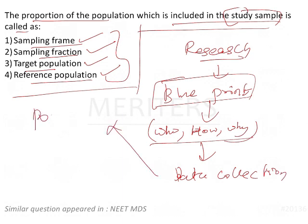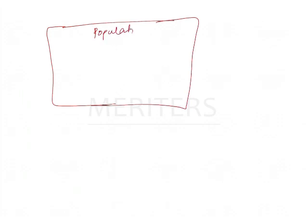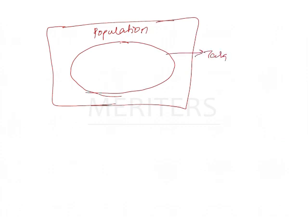The question is: which population will they do this study on? If you know this terminology, you can easily answer. For example, take the whole population — like an entire country. The target population would be, for example, homeless people living in a country.